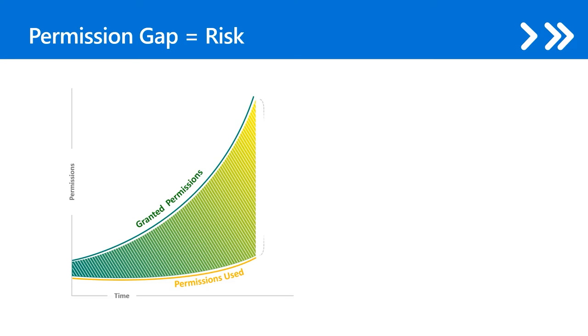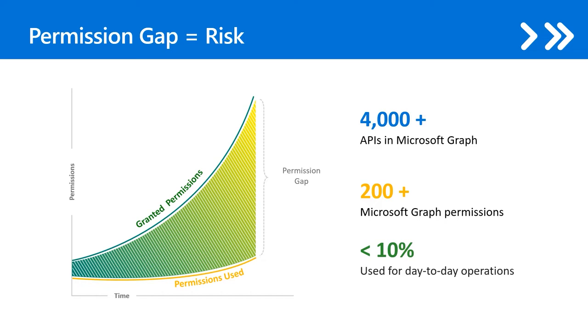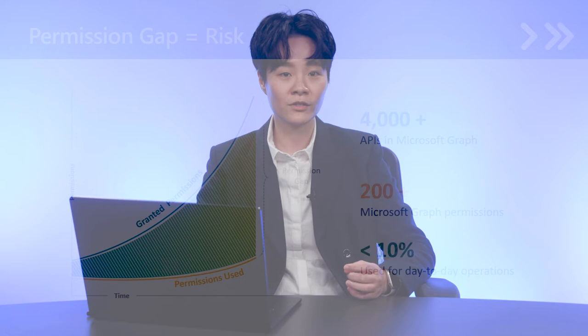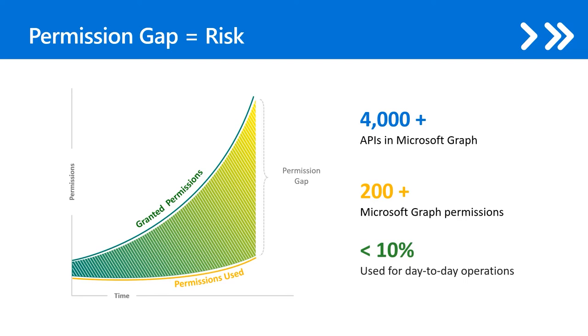Here are some interesting findings from the Microsoft identity platform. We have more than 4,000 APIs in Microsoft Graph. More than 200 Microsoft Graph permissions are available on the Microsoft identity platform. This gives developers access to a wide range of data and the ability to apply granularity to the permissions requested by their apps. But it means that developers need to think carefully about what is actually required for their app. In our own investigations, we found that only 10% of the permissions in an app are fully utilized for their scenario. Be aware of the permission gap and regularly check your application.